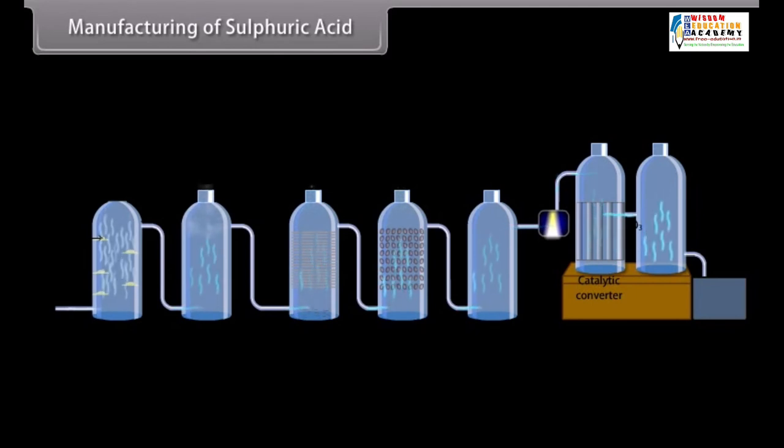The hot gases are then passed through the catalyst chamber where SO2 is oxidized to SO3. SO3 is introduced at the base of the absorption tower, from the top of which concentrated H2SO4 is showered. As SO3 gas moves up, it is dissolved in Sulphuric Acid, forming oleum, which may be drawn out from the base of the tower. Oleum is then diluted with water to get H2SO4 of the desired concentration.